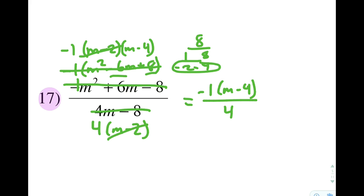And whenever we have multiple factors left in the numerator for a multiplication problem or a simplifying problem, I will be okay if you leave it like that. Another correct way to write this would be to distribute that negative 1, so you get negative m plus 4 over 4.